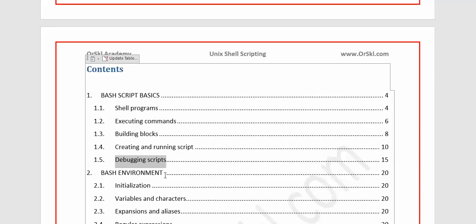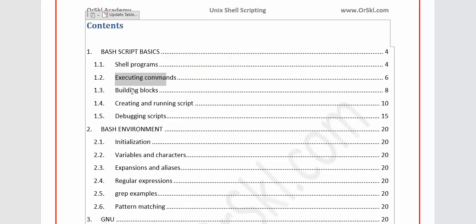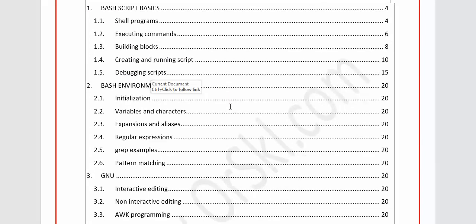The next topic we'll concentrate on is the bash environment. Please don't focus on the page numbers because the content is not yet fully updated — only this session's content covering shell programs, executing commands, and building blocks is updated. In the bash environment, we are going to see the different variables, characters, aliases, and expressions that are possible to be used inside a script and where you can use them.